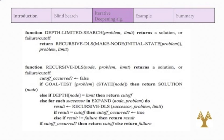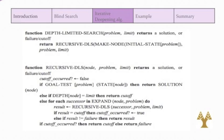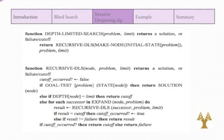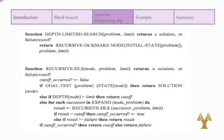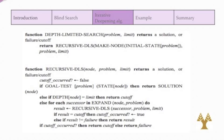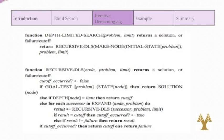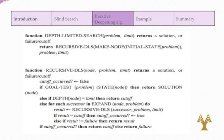Now I will explain the depth limit search function, because it's inside the iterative deepening search function. This is a recursive implementation. Notice that depth limit search can terminate with two kinds of failure: the standard failure value indicates no solution, and the cutoff value indicates no solution within the depth limit.